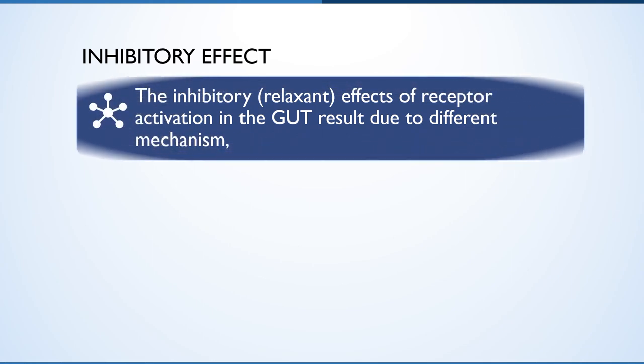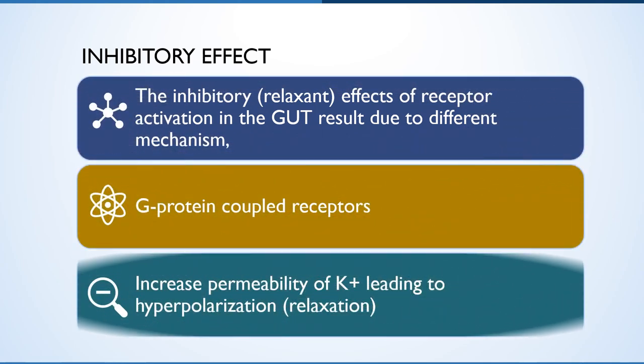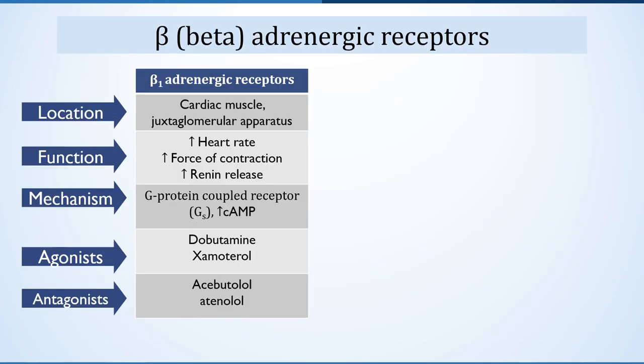Beta-1 receptors are located postsynaptically at cardiac muscle and the juxtaglomerular apparatus, where they increase heart rate, force of contraction and renin release. These receptors belong to the G-protein coupled receptor family and increase cyclic AMP. The agonists and antagonists are shown here.